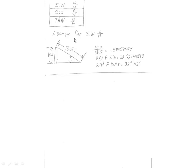The last example for sine — opposite over the hypotenuse. The opposite side is 10.0 and the hypotenuse is 18.5. So divide 10 by 18.5, go to second function sine, and it's going to be 32.72. Second function DMS will take you to degrees and minutes: 32 degrees, 43 minutes.